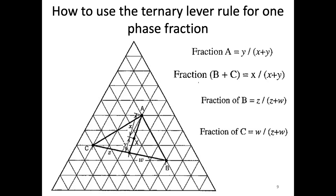There's also a way to determine just one of the phase fractions. This isn't quite as useful as the complete method, but sometimes you might want just one of them. In that case, we draw just one line going through point X and through point A to the opposite end of the triangle, intersecting base C-B. The fractions between A, X, and the opposite base give us the fraction of A in the remaining B and C. The opposite segment Y equals the fraction of A, so Y over X plus Y equals the fraction of A.